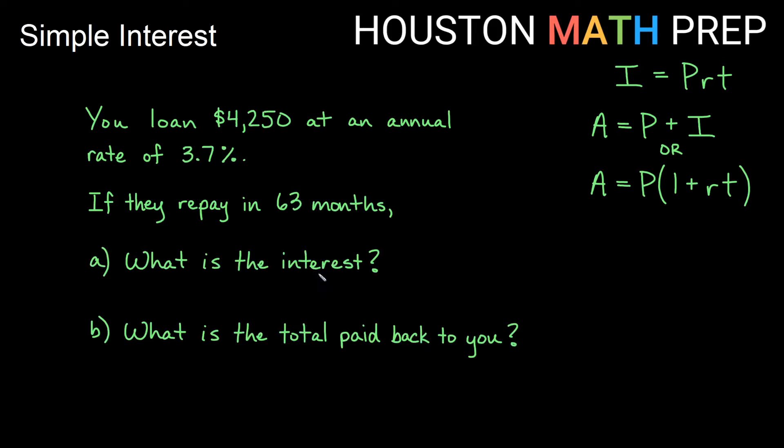Let's look at one. Now here I need to know both. I want to know the interest and the total paid back. So let's just go back to our P plus I. Let's go ahead and figure out I first. So we loan $4,250 at an annual rate of 3.7% and they repay in 63 months. So a couple of things. Notice that the annual rate is 3.7%, but the term is given to us in months. So what we need to figure out is how many years. So 63 months, if you take this 63 and divide by 12 because there are 12 months in a year, then that is going to give you that it's 5.25, five and a quarter years.